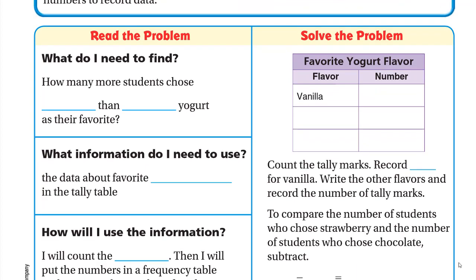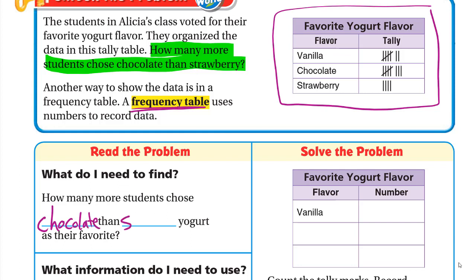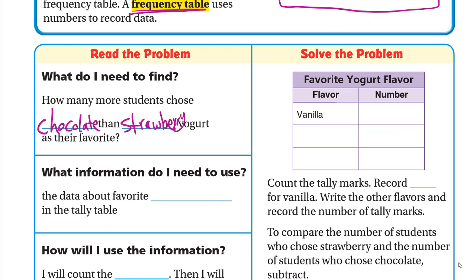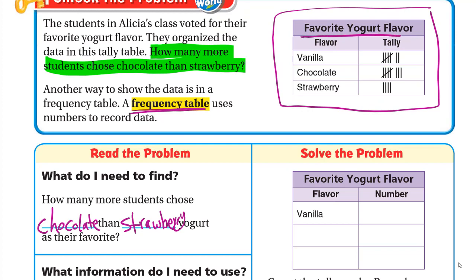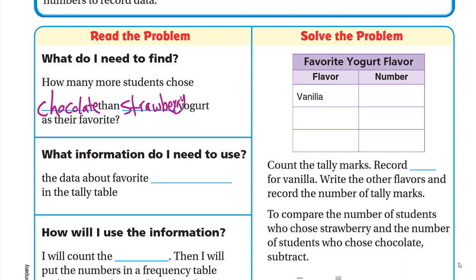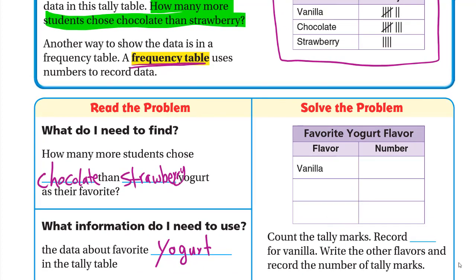What do I need to find? Going back to the question: how many more students chose chocolate than strawberry? What information do I need to use? I need to use the data about favorite yogurt flavor in the tally table — the data is about the favorite yogurt flavor.